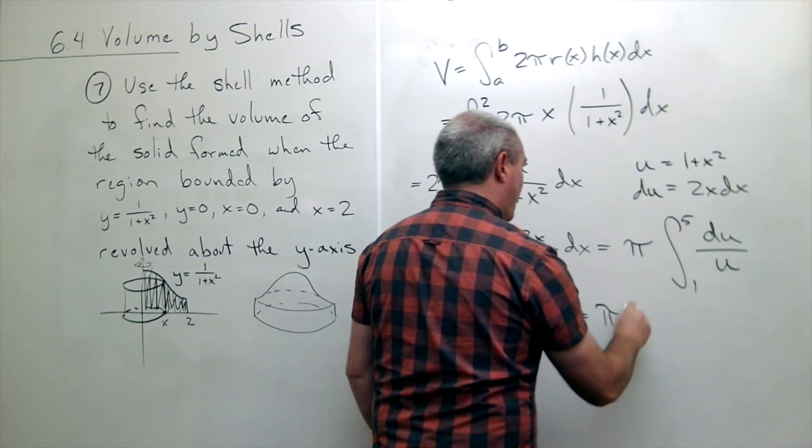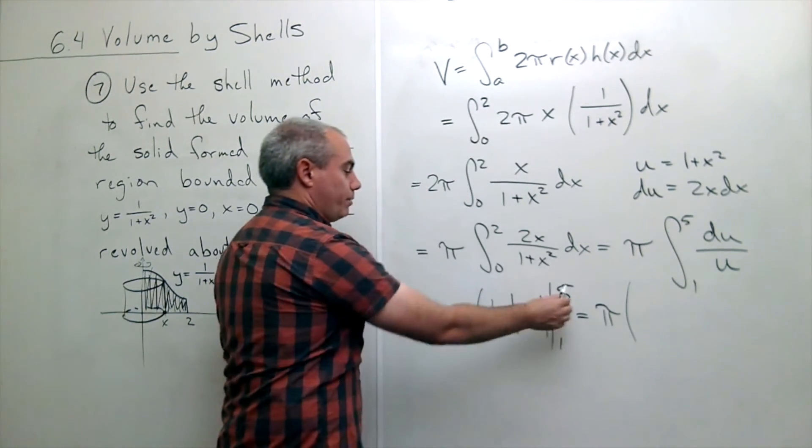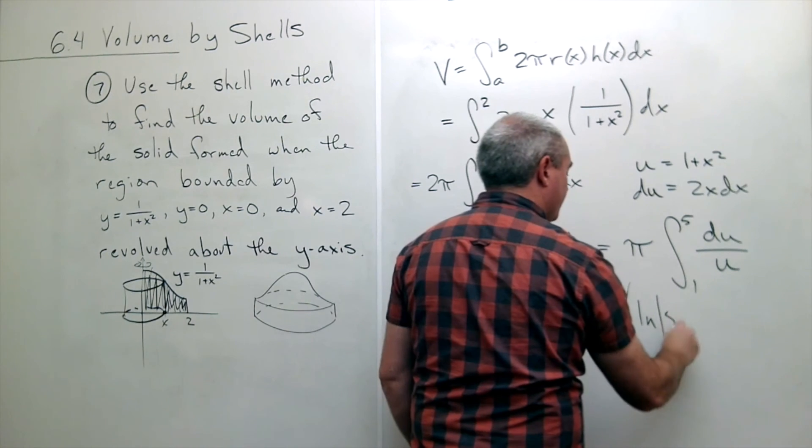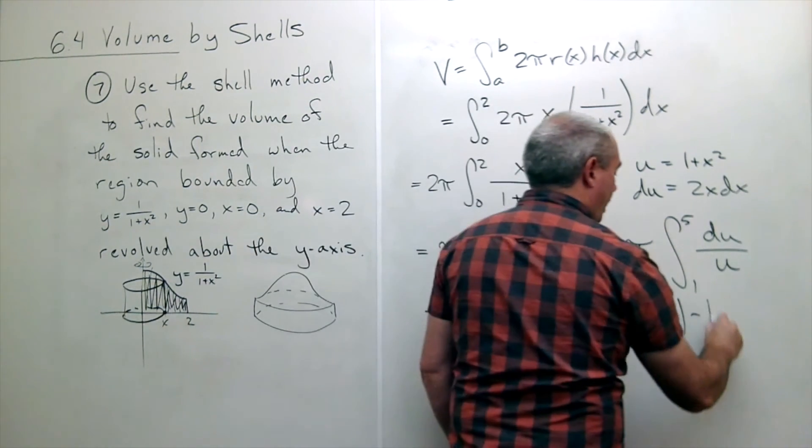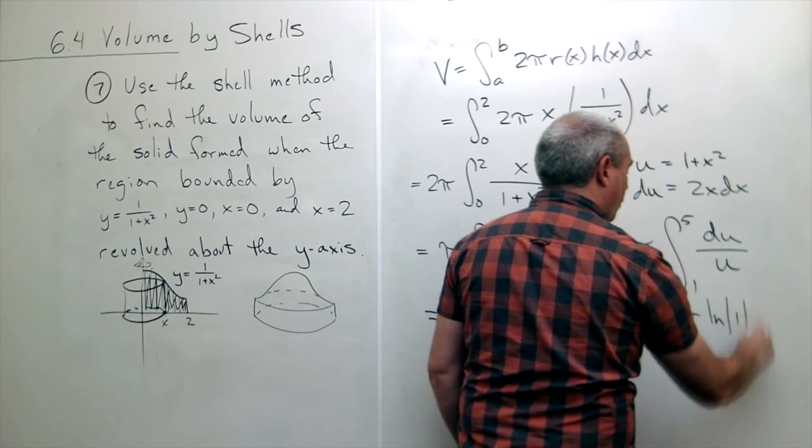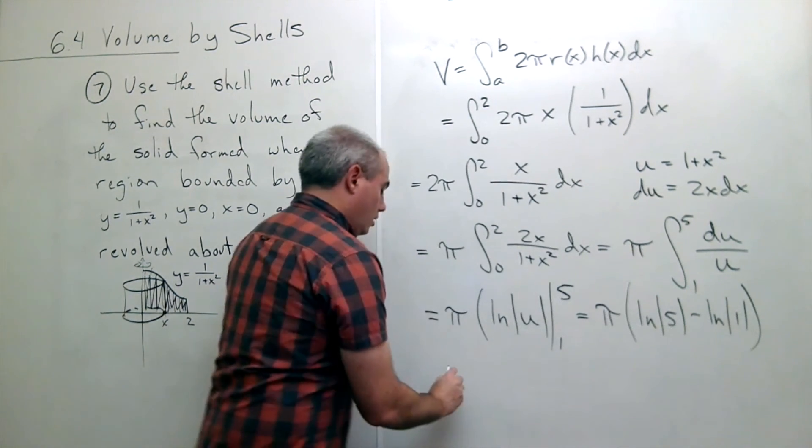This gives me pi times. If I plug in 5 I get ln of absolute value of 5 which of course is 5 minus ln of absolute value of 1.